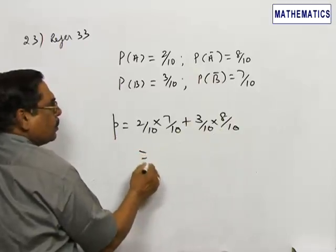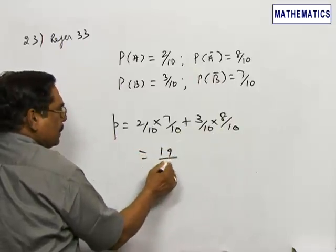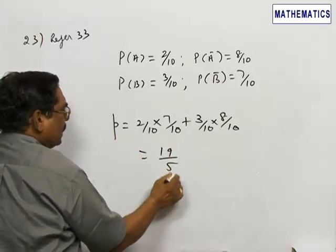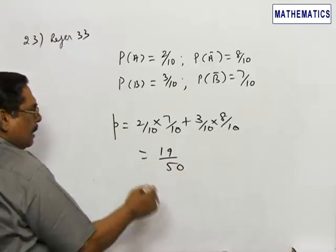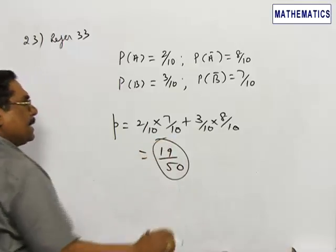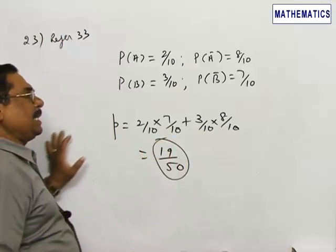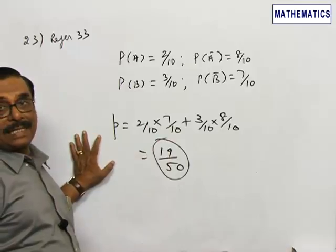This is equal to 19 by 50. Therefore the required probability is equal to 19 by 50, and choice 3 is correct.